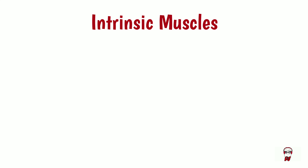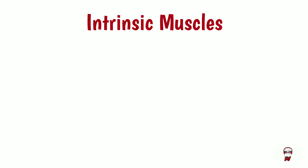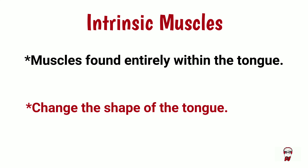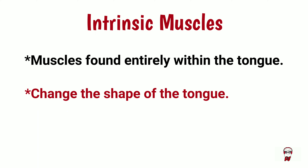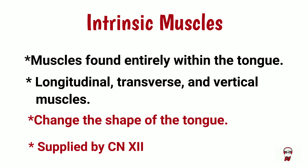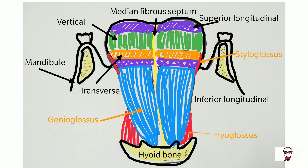Now let's move on to the intrinsic muscles of the tongue. These are muscles found entirely within the tongue and their function is to change the shape of the tongue. These muscles include the superior longitudinal, inferior longitudinal, transverse, and vertical muscles. All intrinsic muscles are supplied by the hypoglossal nerve.